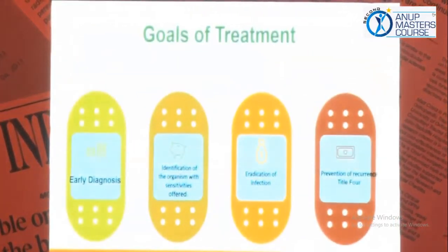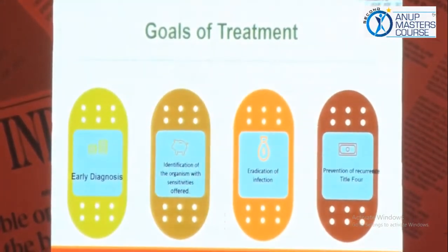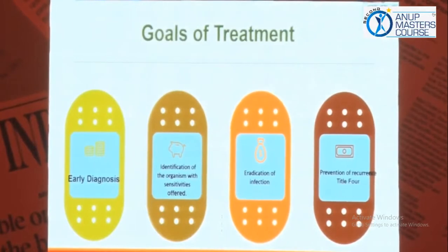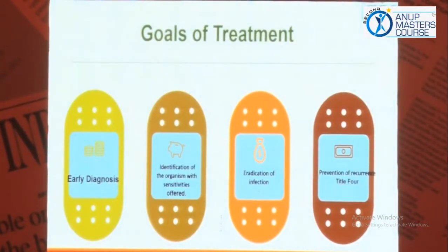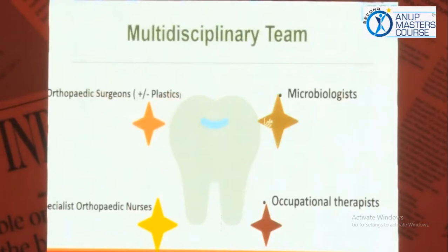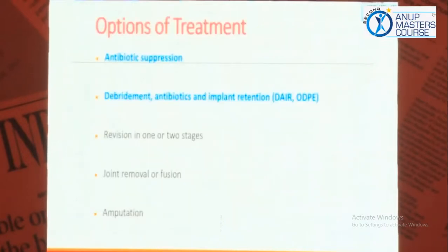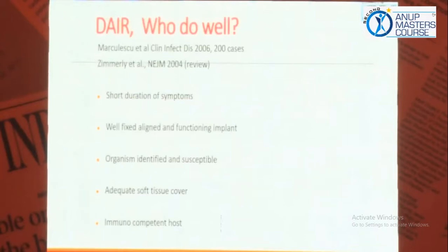One is single stage, two stage, and one is DAIR - that is debridement and implant retention. So what is our goal of treatment? You should give an early diagnosis, identify the organisms if possible, aim to eradicate the infection, and prevention of recurrence. This is also very important and for this you need a multidisciplinary team - right from microbiologist to specialized orthopedic nurses. I am going to enlighten you about the DAIR Protocol.